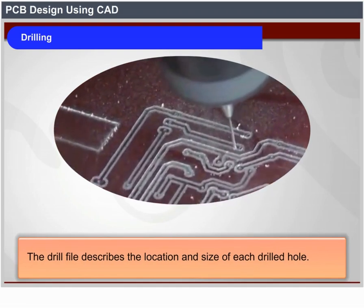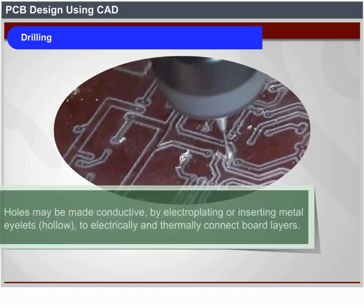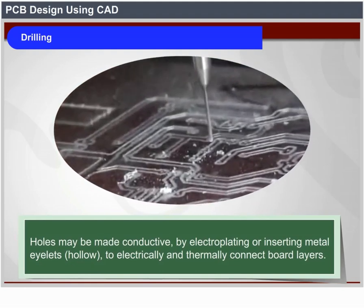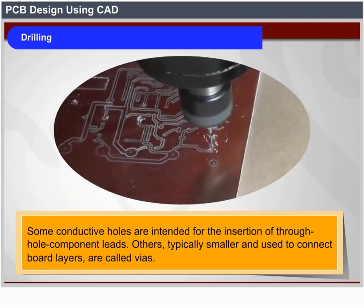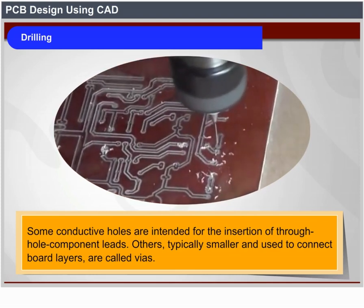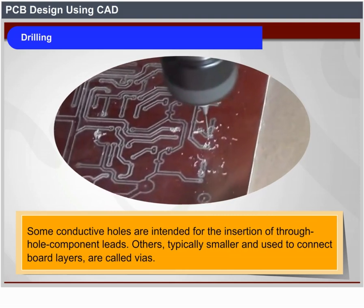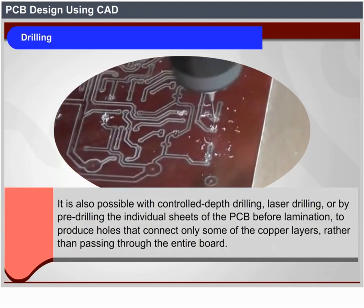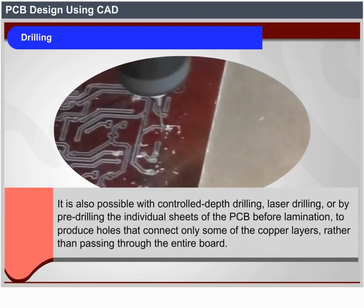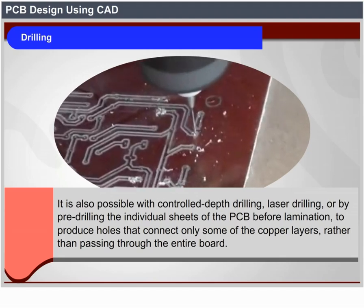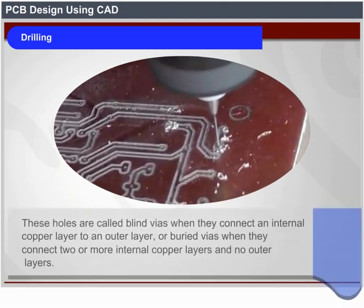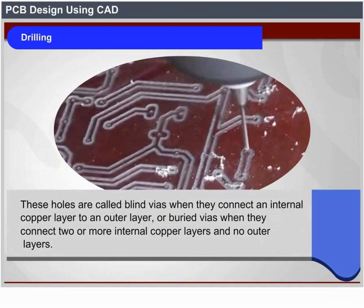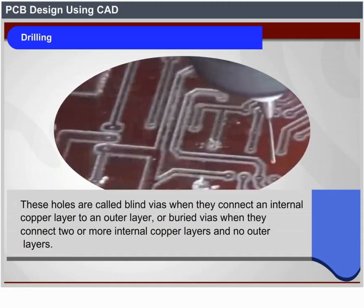The drill file describes the location and size of each drilled hole. Holes may be made conductive by electroplating or inserting metal eyelets to electrically and thermally connect board layers. Some conductive holes are intended for insertion of through-hole component leads; others, typically smaller and used to connect board layers, are called vias. With controlled depth drilling, laser drilling, or pre-drilling individual sheets before lamination, it is possible to produce holes that connect only some copper layers. These are called blind vias (connecting an internal layer to an outer layer) or buried vias (connecting two or more internal layers with no outer layers).